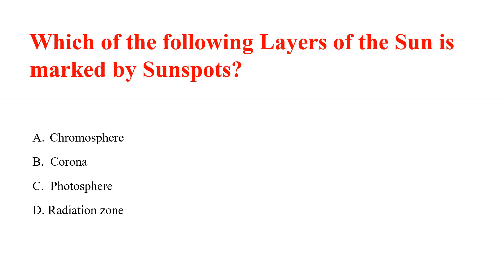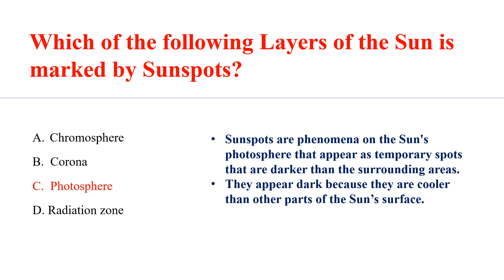Which layer of the sun is marked by sunspots? The answer is the Photosphere. Sunspots are phenomena on the sun's photosphere that appear as temporary spots darker than the surrounding area. They appear dark because they are cooler than other parts of the sun's surface.